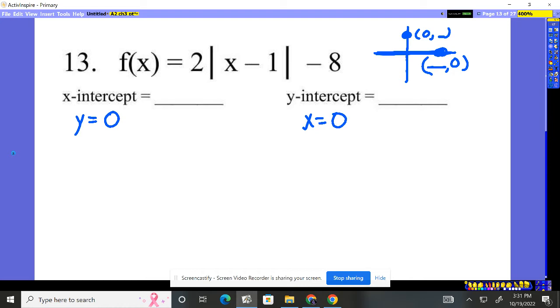Alright, let's do the y-intercept first this time because it's always the easiest. So we have f of x, which is just y, is equal to 2 times the absolute value of zero minus 1 minus 8. Alright, no big deal. 2 times 0 minus 1 is negative 1. Absolute value of negative 1 minus 8. What's the absolute value of negative 1? 1.